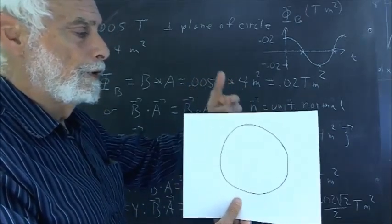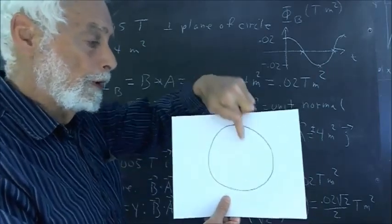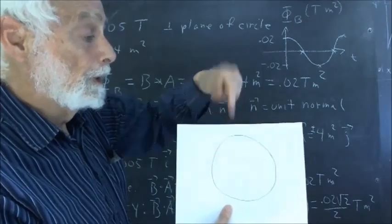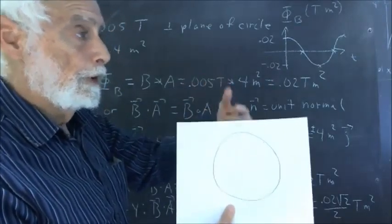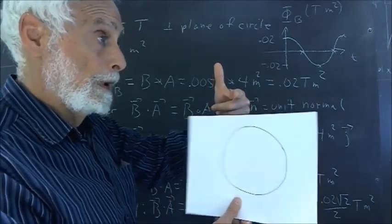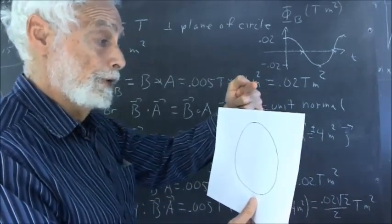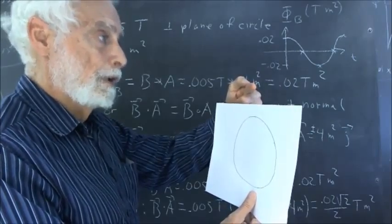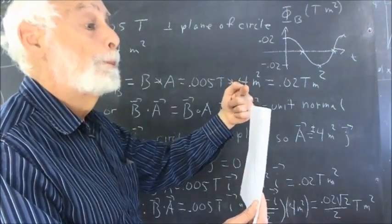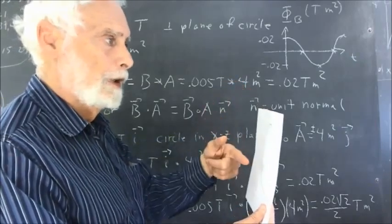This circle is going to intercept the maximum amount of the magnetic field provided the magnetic field is perpendicular to the plane of the loop, which would make it parallel to a unit normal vector perpendicular to the loop. So with the magnetic field and unit normal vector in the same direction, we have maximum interception of the magnetic field by the loop. If we change the loop's orientation with the magnetic field still in the same direction, the loop intercepts less of the magnetic field. And if the loop moves to the point where its plane is parallel to the magnetic field, it's going to intercept nothing.